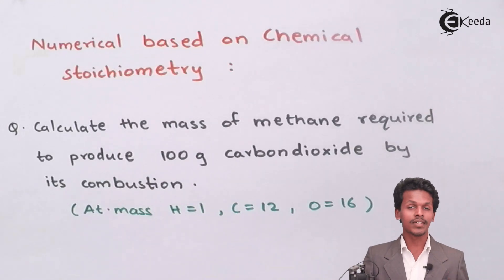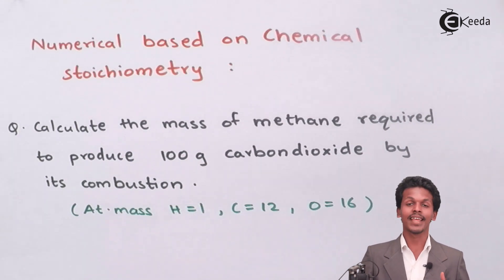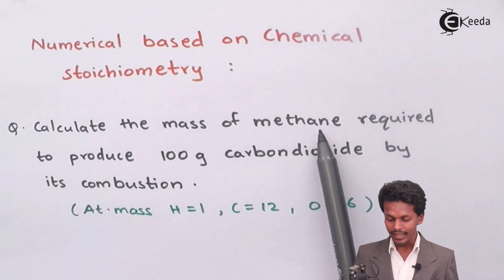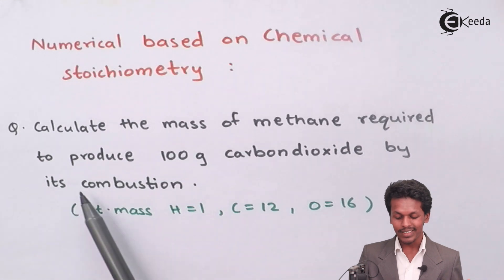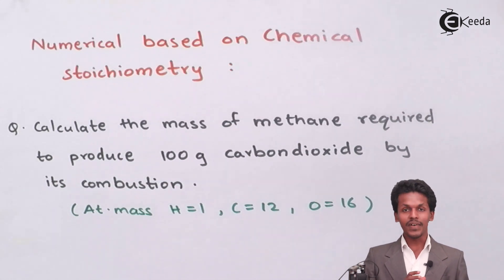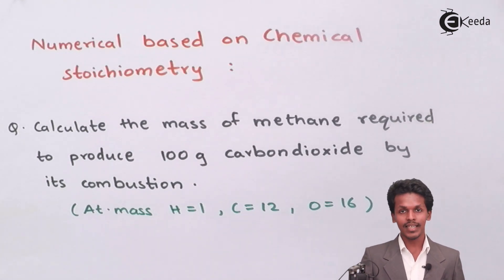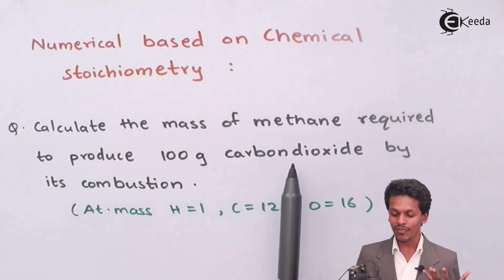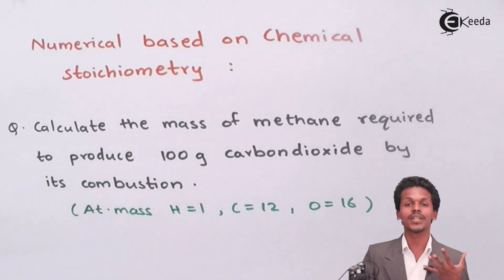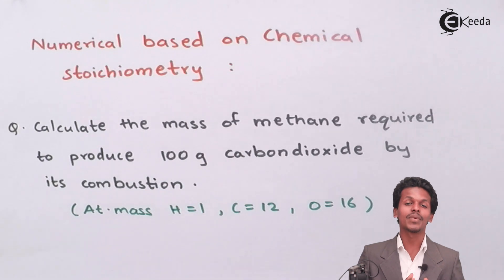This question is based on chemical stoichiometry. First of all, we have to analyze what the question is asking, and then we will find the answer. They have given us to calculate the mass of methane required to produce 100 grams of carbon dioxide by its combustion. The atomic mass of hydrogen, carbon, and oxygen is also provided. So if methane produces 100 grams of carbon dioxide, how much mass of methane is required? This is what we are going to deal with using chemical stoichiometry.